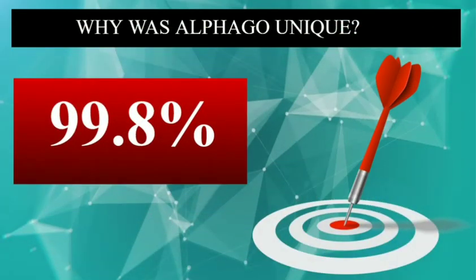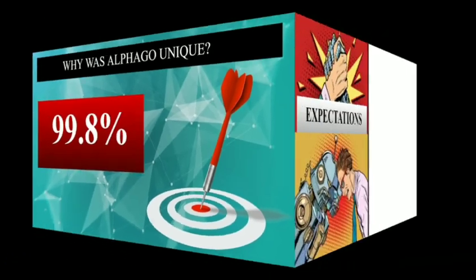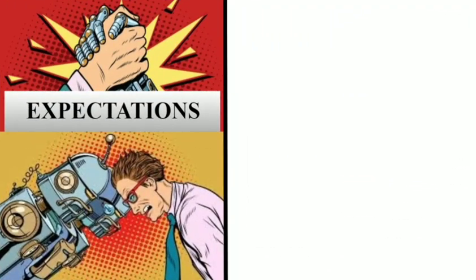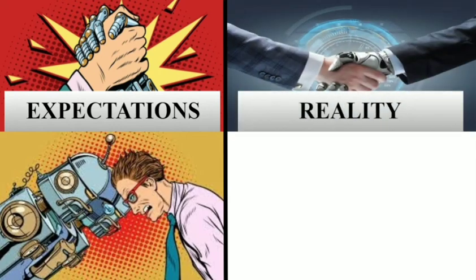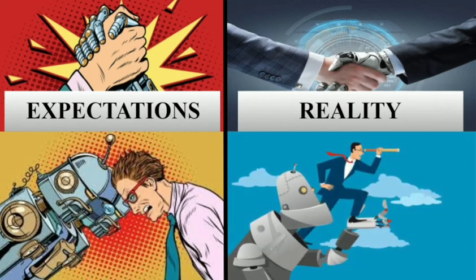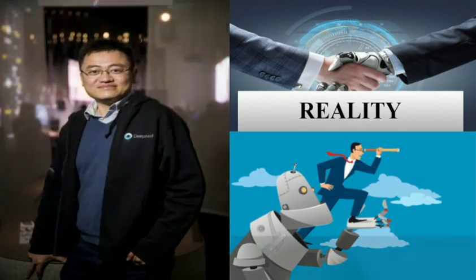Lastly, this AlphaGo program was 99.8% more accurate than all rival programs in the game of Go. Now many of you might think that AI can be a threat — but in reality it is not so. In this particular case, AlphaGo uplifted both the players it played against, so much so that both Fan Hui and Lee Sedol won almost every Go championship after this.